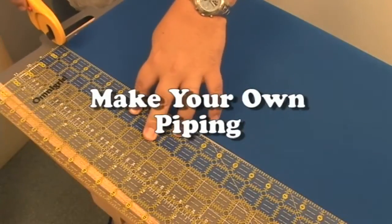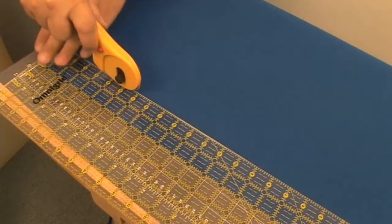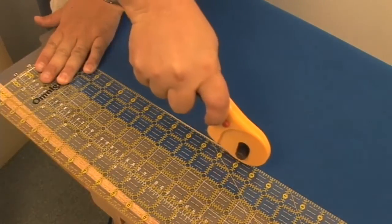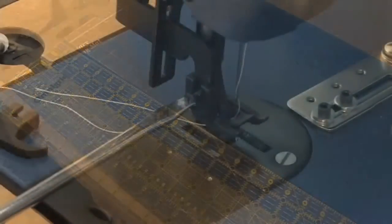Have you ever made your own piping? Did you know you can use the 2 inch binder to make your own piping? Just pick the fabric of your choice and cut it in 2 inch strips. We're using the Omnigrid ruler and the rotary cutter to cut our 2 inch strips.